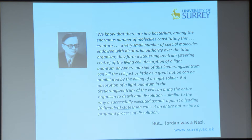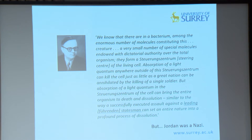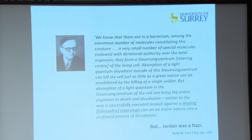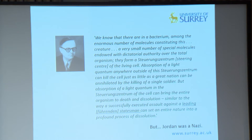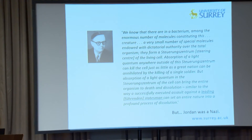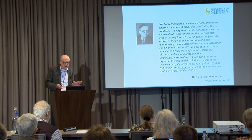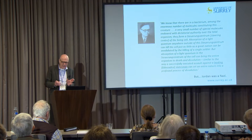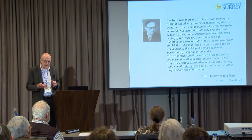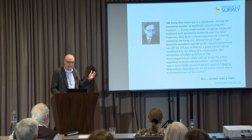Jordan was essentially saying that genes in living organisms play the same role in life as the Führer plays in Nazi Germany. He saw genes as the dictators of living cells, and because he reckoned genes were small molecular entities, he said that dictatorship would take place at a quantum level. He was a Nazi, and that was one of the reasons why quantum biology fell into abeyance after the war - its chief spokesman had brought it into Nazi ideology.